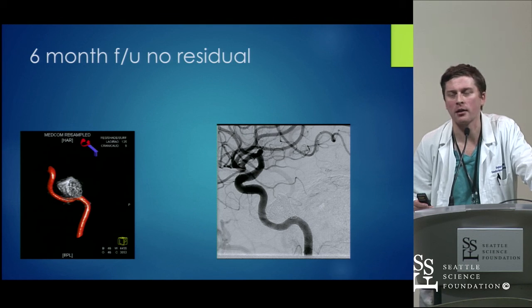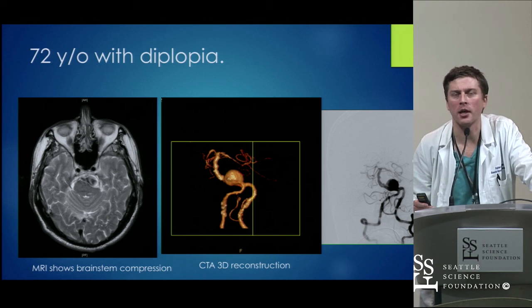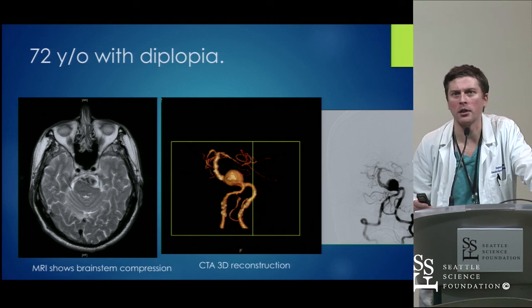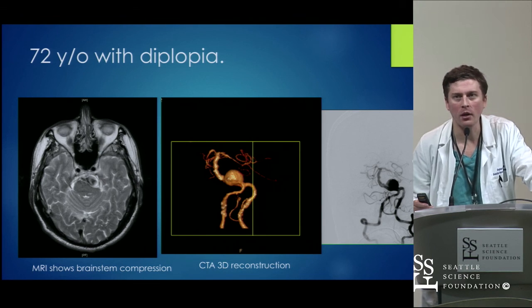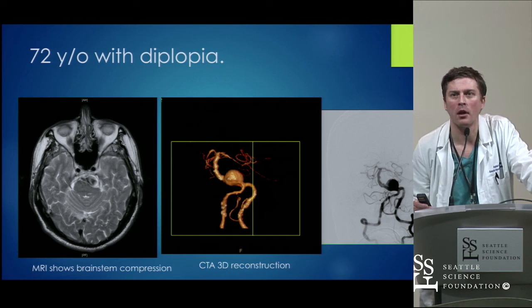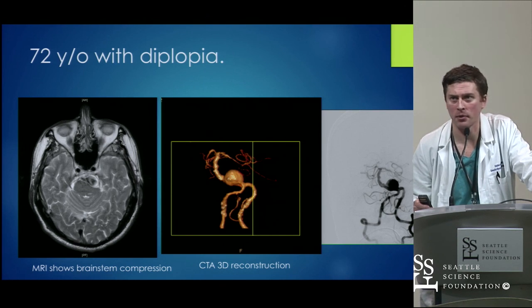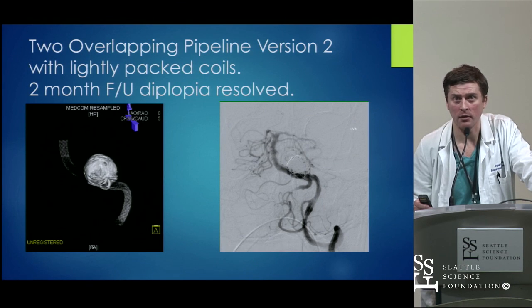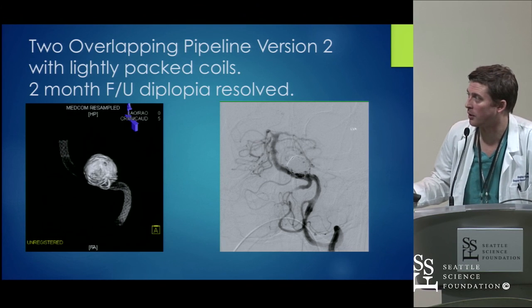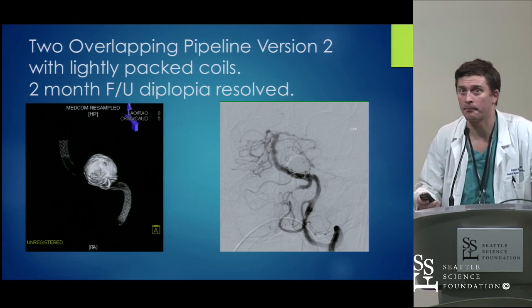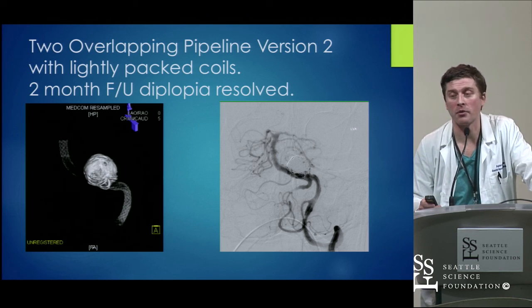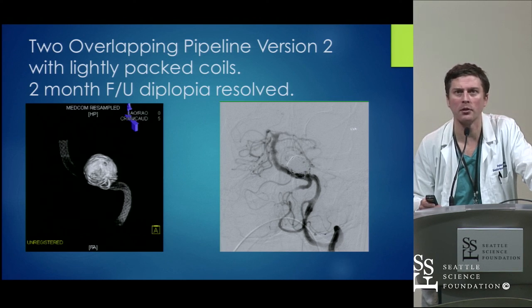With Plavix, we try to do two to three weeks of loading because sometimes patients become non-responders out of nowhere. This is a 72-year-old man who came in with diplopia — a mass pushing in on his brain stem from an ugly vertebrobasilar aneurysm. I got advice from my mentors on whether to just Pipeline or put in coils. It's a large aneurysm, but we wanted to minimize mass effect, so we loosely packed it and placed two Pipeline Flex devices. He also had an ophthalmic aneurysm that was Pipelined a couple of months later, and the vertebral aneurysm is completely occluded with improvement in diplopia.